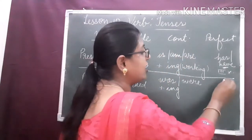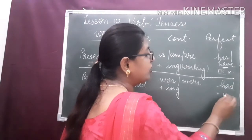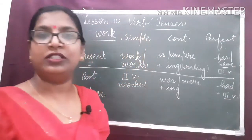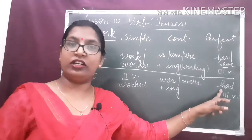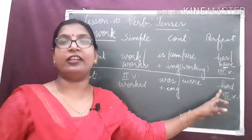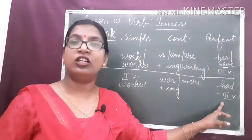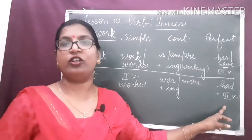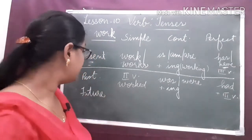In past perfect tense, we use the helping verb 'had' plus the third form of the verb. Whether the subject is singular or plural, we use the helping verb 'had' in past perfect tense and the third form of the main verb.